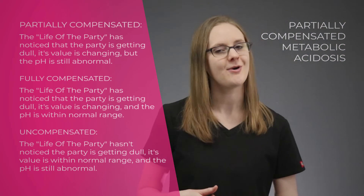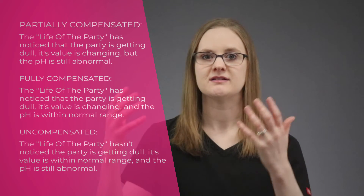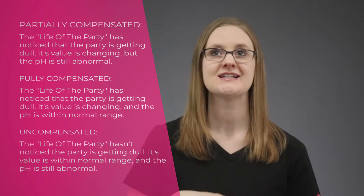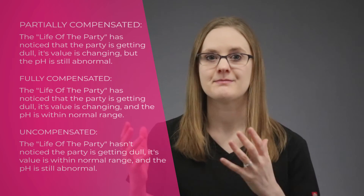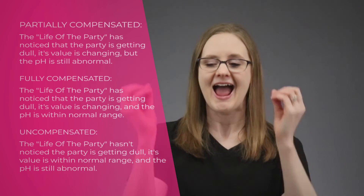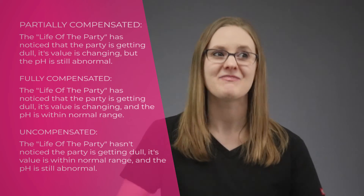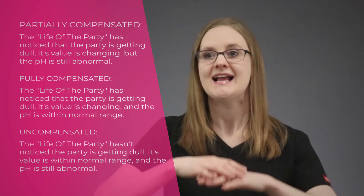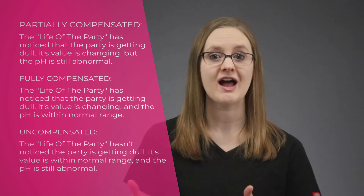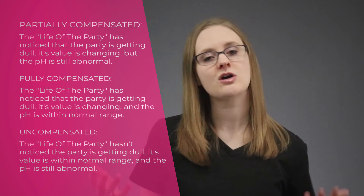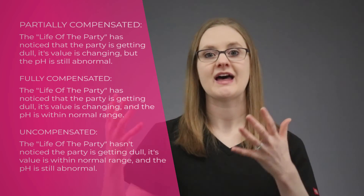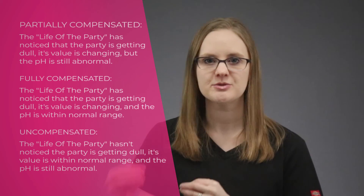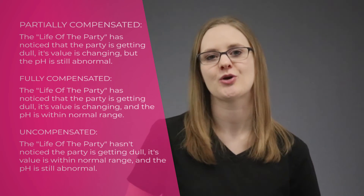So in our ABG example here, it's partially compensated metabolic acidosis. Uncompensated means that the life of the party has not noticed anything is wrong — its value is still within normal range and the pH is still messed up. Partially compensated means the life of the party has noticed that the party pooper is being a party pooper, but they haven't had enough time to help out — that pH is still out of whack even though the life of the party's value is changing to compensate. Full compensation happens when the helper's value has started to change and the pH has gone back within normal range.